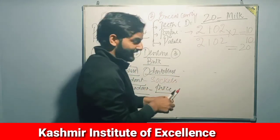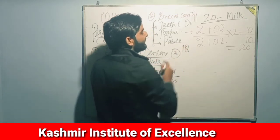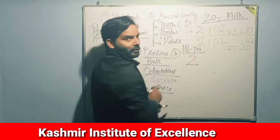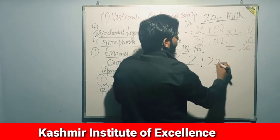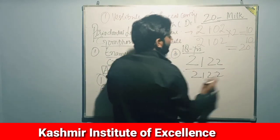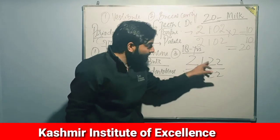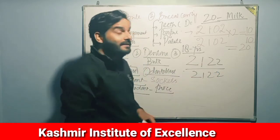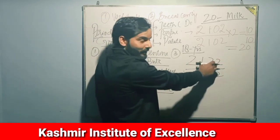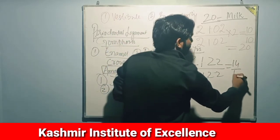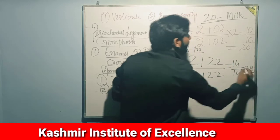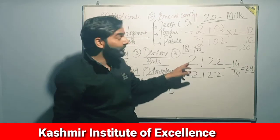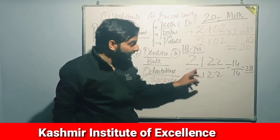Up to the age of 18, the dental formula changes to 2, 1, 2, 2 divided by 2, 1, 2, 2. One half of the jaw has 7 teeth, so one full jaw has 14, and both jaws together give 28 teeth. This is the dental formula up to age 18, where premolars now appear.